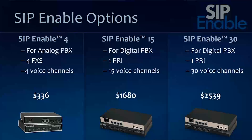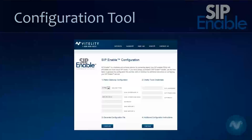As we go along, if you have any questions on any of the products or how they work, feel free to pop a question in the chat box and one of us will answer it. To get SIP Enable up and working, we've created a configuration tool at vitality.com/sip-enable. You enter a very small amount of information and it outputs a configuration file that you upload to the device — you're up and running in just a few seconds, versus trying to configure one of these things by hand, which is very difficult.